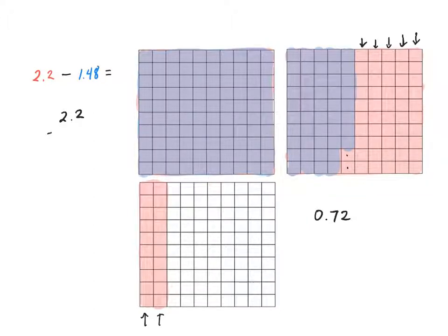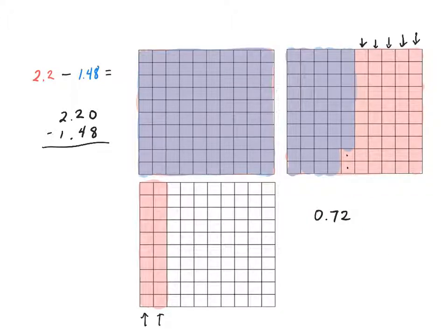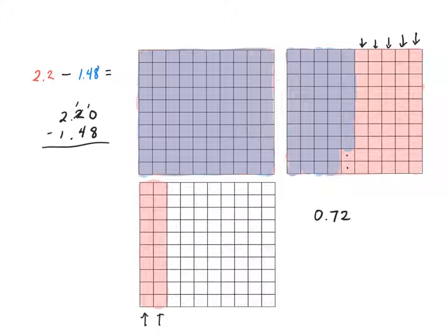If I set up the actual problem and line up place values, I must make an equivalent decimal because I can't take eight away from nothing. So I regroup: the tenths place becomes one tenth, and the hundredths become ten hundredths. Then ten hundredths minus eight hundredths — that's this full long of ten hundredths, I subtracted the eight hundredths, and I'm left with these two hundredths right there.